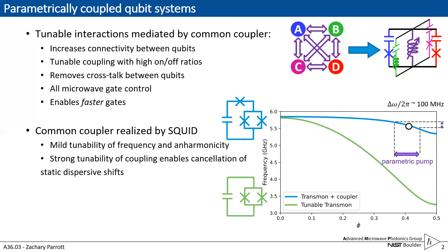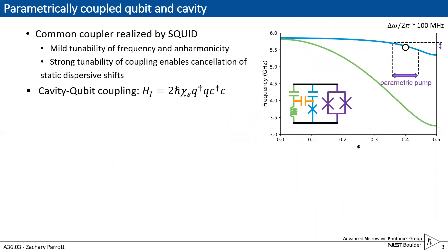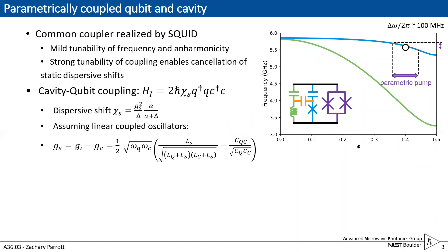Now if we consider that qubit mode capacitively coupled to a cavity mode with a given interaction Hamiltonian as shown, we'll have a dispersive shift of the cavity which will be dependent on the coupling G.